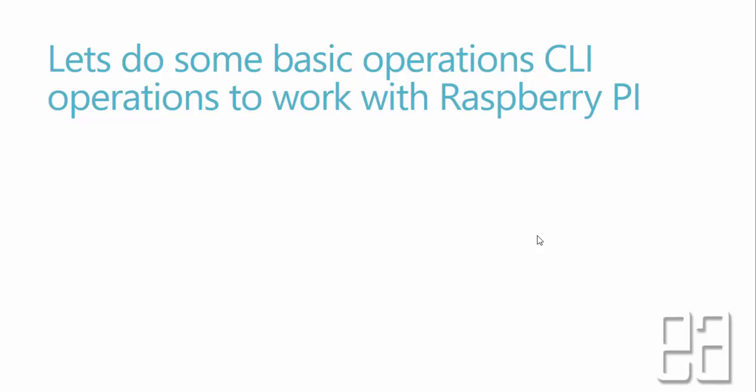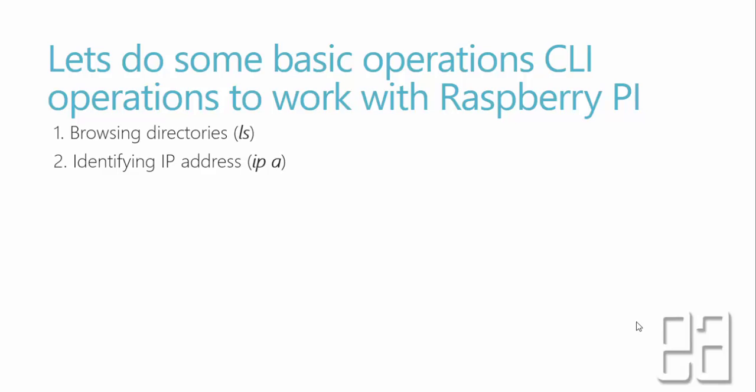The first command we're going to work with in Linux is browsing the directories, which is very commonly used — the LS command. It's going to list the directories, and LS -A will show the hidden files. For identifying the IP address, you can use IPA, which will identify the IP address of your Linux system.